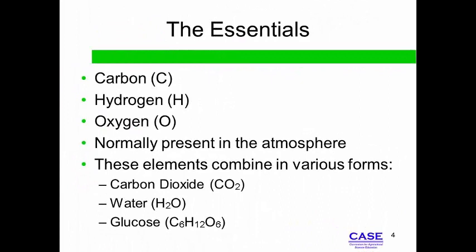The three essential elements — carbon, hydrogen, and oxygen — are present in the soil and air in the forms of carbon dioxide and water. All three nutrients make up glucose molecules manufactured by plants during photosynthesis.